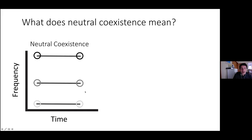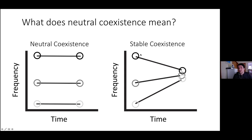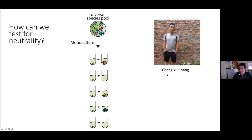Under neutral coexistence, initial inoculation frequencies would be more or less preserved on average. Under stable coexistence, by contrast, it doesn't matter what the initial frequency is — communities converge to the same equilibrium because both species can invade each other when rare. That is a hallmark of stable coexistence. So neutral coexistence would give one pattern and stable coexistence another.